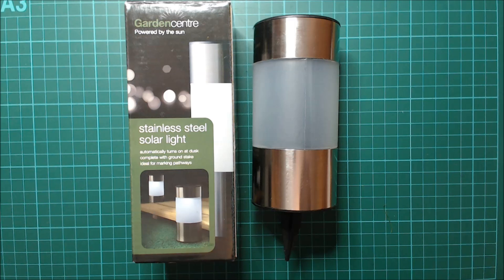This video is about how to convert one of these cheap pound store or dollar store solar LED lights into the power source for an electric slug or snail fence.